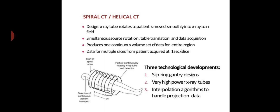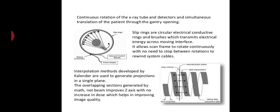X-ray tube rotates as patient is moved smoothly into x-ray scan field. Simultaneous source rotation, table translation and data acquisition produces one continuous volume set of data for entire region. Data for multiple slices from patient is required at one second per slice. Three technological developments: slip ring gantry design, very high power x-ray tubes, and interpolation algorithms to handle projection data.